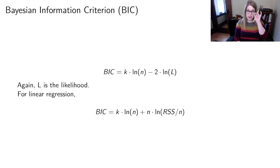And then the final criterion is called Bayesian information criterion, BIC. So this is sort of a different version, a competitor to AIC. Again, L is the likelihood here. And for linear regression, it gets a little bit simplified. And again, smaller values are better.